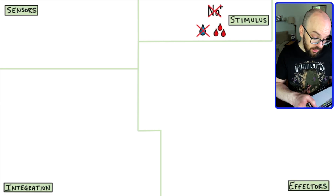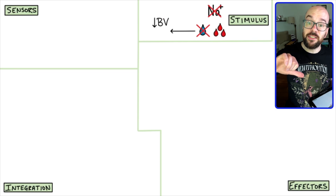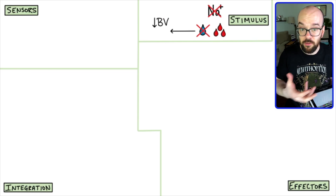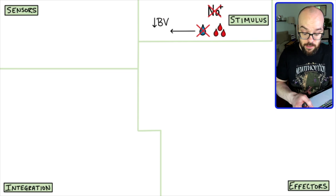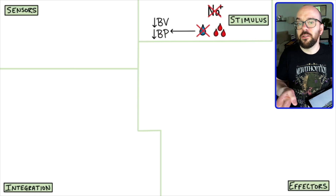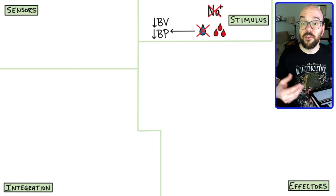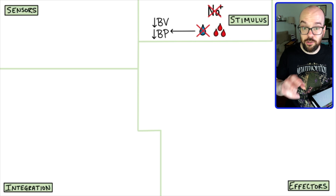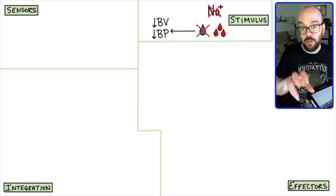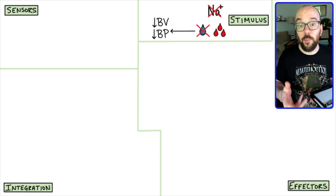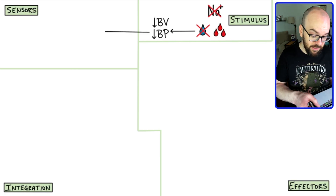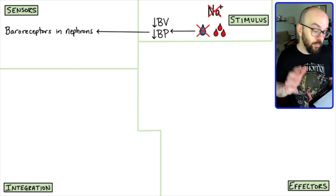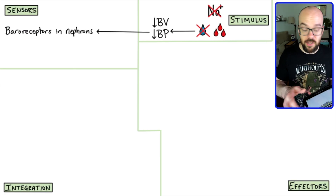If there's dehydration or blood loss, that's going to cause a decrease in blood volume — less fluid in the blood — which is also going to lead to a decrease in blood pressure, since there's a lower pressure of blood pushing on the artery walls. So first, our body has to sense that something is not where it's supposed to be, and one of the ways we do that is through baroreceptors and nephrons.